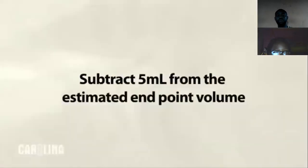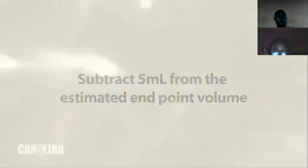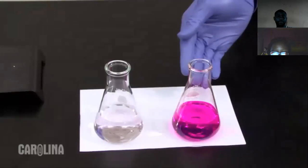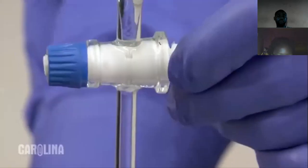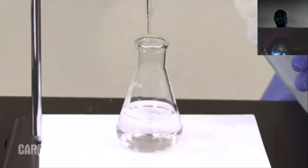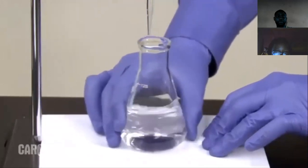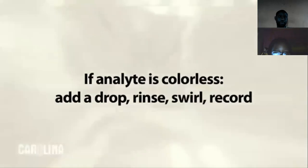Subtract five milliliters from the estimated endpoint volume to get the amount of titrant that can be safely added before slower addition is required. The desired endpoint is a pale, faintly colored analyte. To reduce the risk of passing the endpoint, slow down the addition of titrant when flashes of color appear. Adjust the stopcock to slow the flow to a dropwise rate. When you notice the indicator taking longer to fade, close the stopcock. Rinse the tip with deionized water, swirl the flask, and record the final volume. Add a drop, rinse, and swirl until a faint color persists.